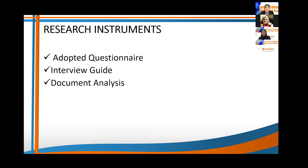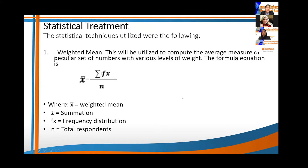The research instruments are the following: the adapted questionnaire, the interview guide, and document analysis. For statistical treatment, the first one is the weighted mean, which is utilized to compute the average measure of a particular set of numbers with various levels of weight, using the formula: summation multiplied by the frequency distribution divided by the total number of respondents.